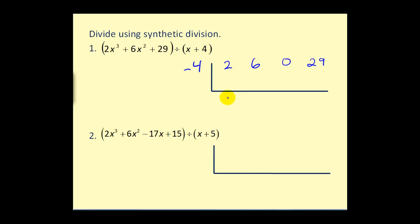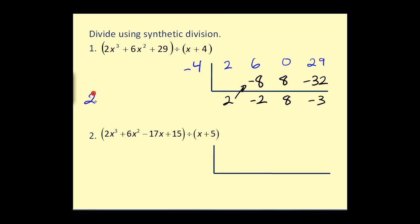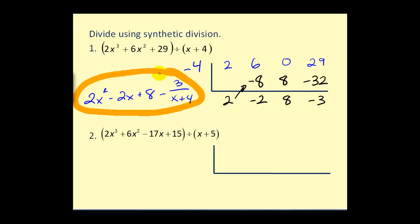We start off by bringing the two down and multiply by k on the diagonal — negative eight. Add, giving negative two. Multiply by k again — positive eight. Add, multiply by k: negative four times eight equals negative 32. The sum here would be negative three. Degree three divided by degree one gives a degree two quotient: two x squared minus two x plus eight, minus the remainder three over the divisor x plus four.